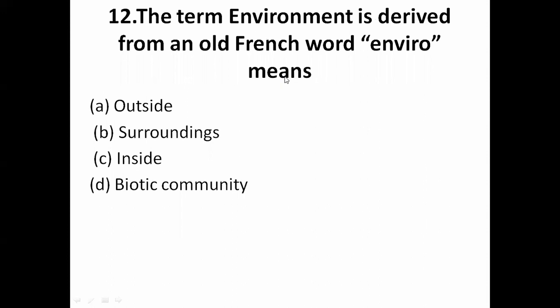The term 'environment' is derived from an old French word 'environs.' The options for its meaning are: A — outside, B — surrounding, C — inside, D — biotic community. The correct answer is B — surroundings.